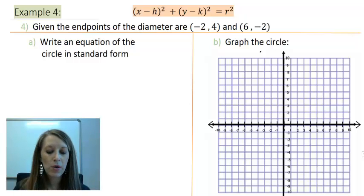In this one it says we are given two endpoints of the diameter. The two endpoints are (-2, 4) and (6, -2). And we want to do two things: we want to come up with the equation of this circle in standard form and we want to graph this circle as well. I encourage you to try and do this one on your own, so this would be the perfect time to pause the video.